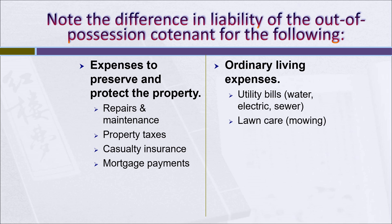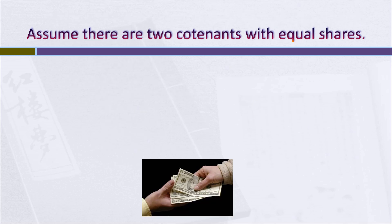Notice the difference in liability of the out-of-possession co-tenant for these two categories. On the left, we have expenses to preserve and protect the property: repairs and maintenance, property taxes, casualty insurance, and mortgage payments. In all probability, the one who's out of possession will be held liable to contribute to all of them. On the other hand, the one who's in possession may incur ordinary living expenses such as utility bills for water, sewer, and electric, or expenditures for lawn care. These are simply the expenses of living in the property and don't preserve and protect it, so the out-of-possession co-tenant is not likely to be held liable for those.